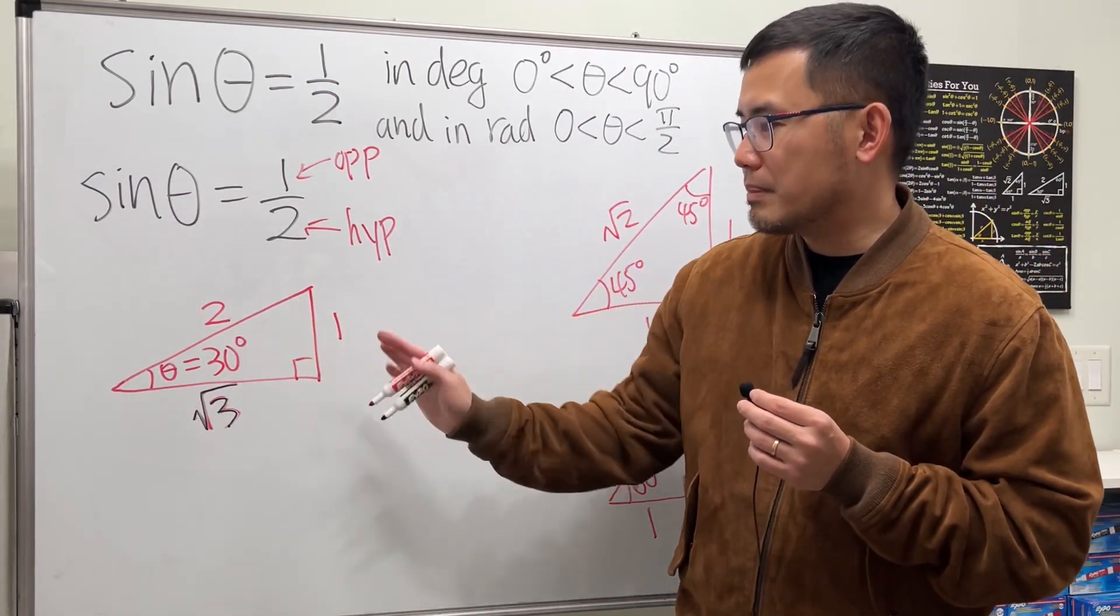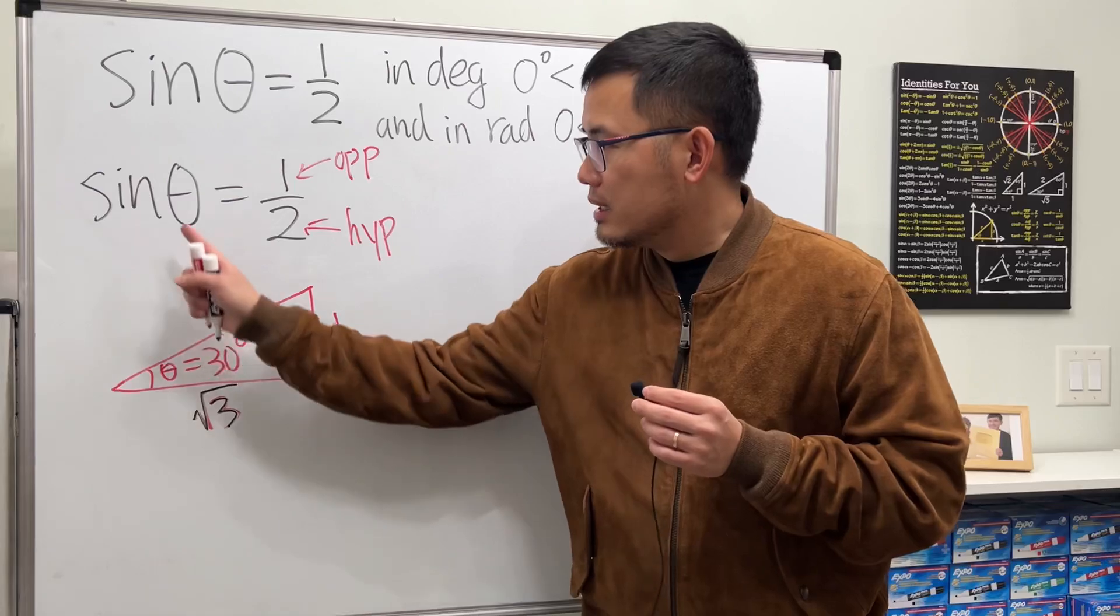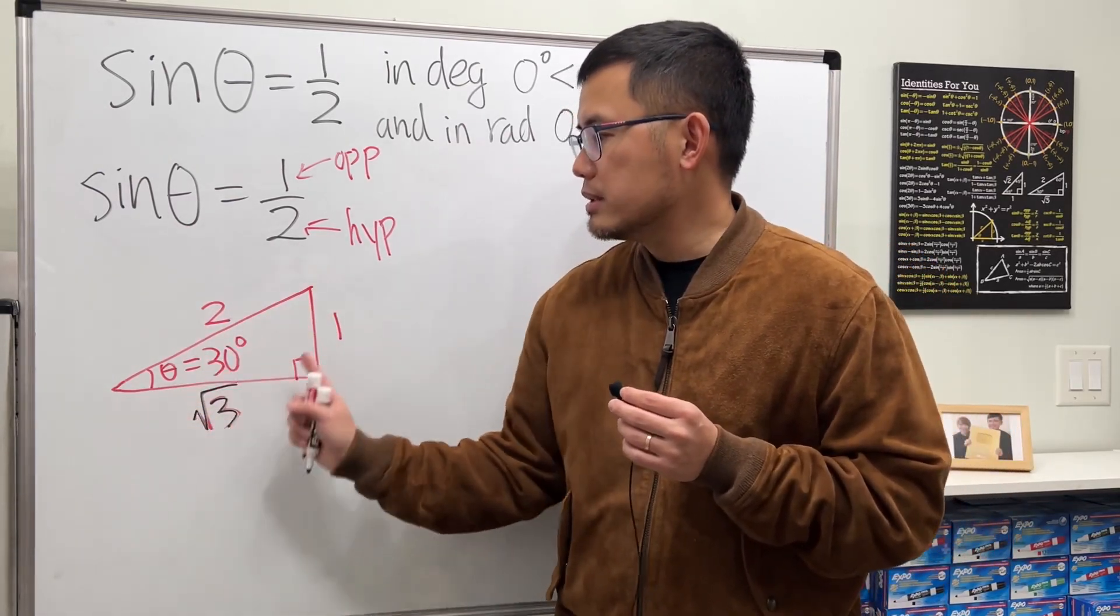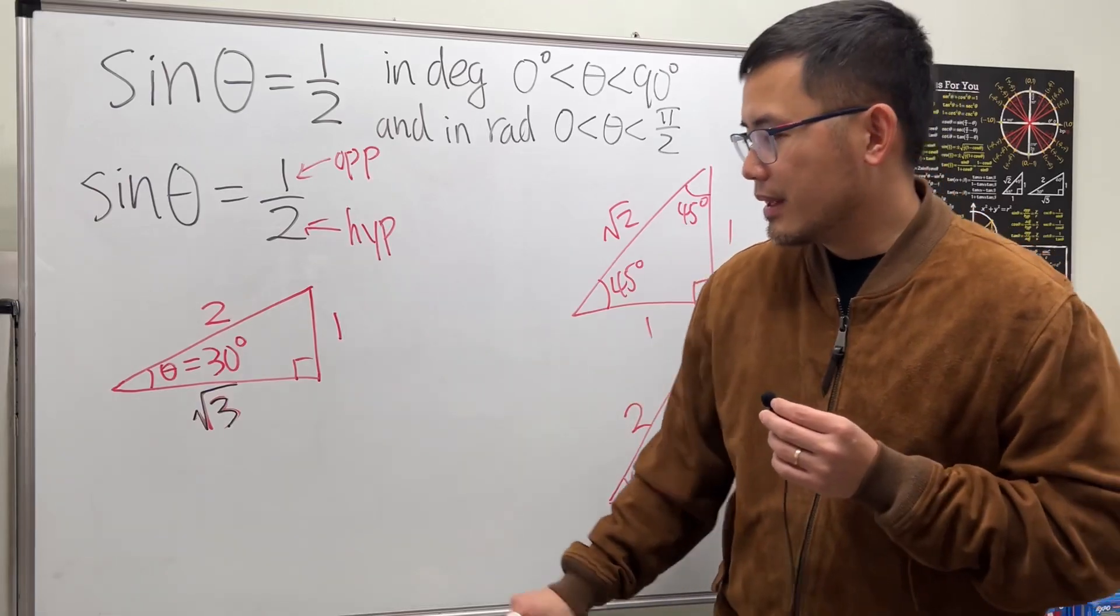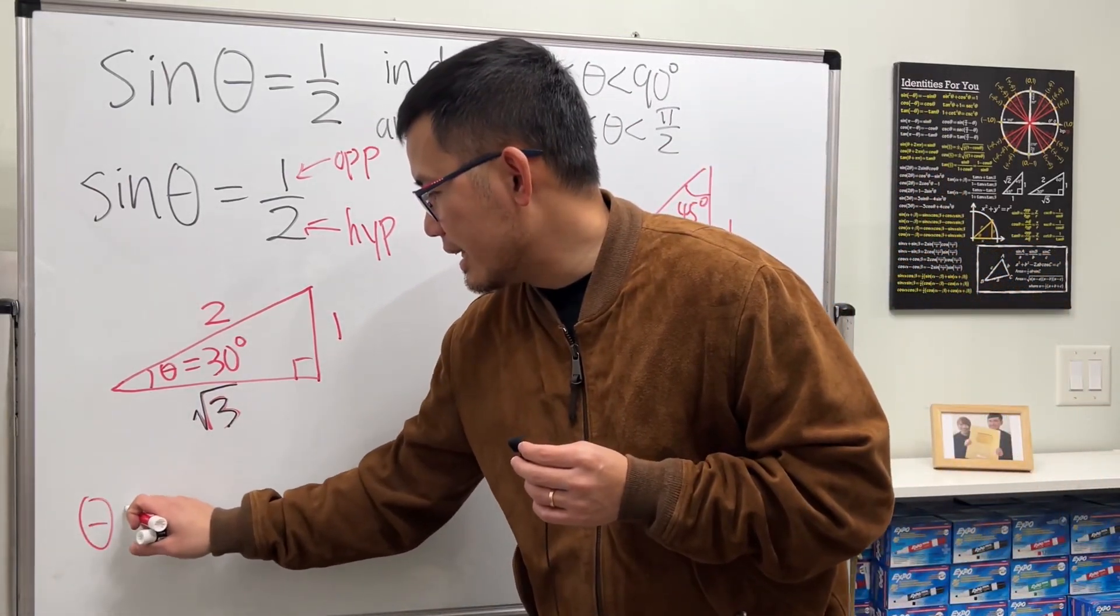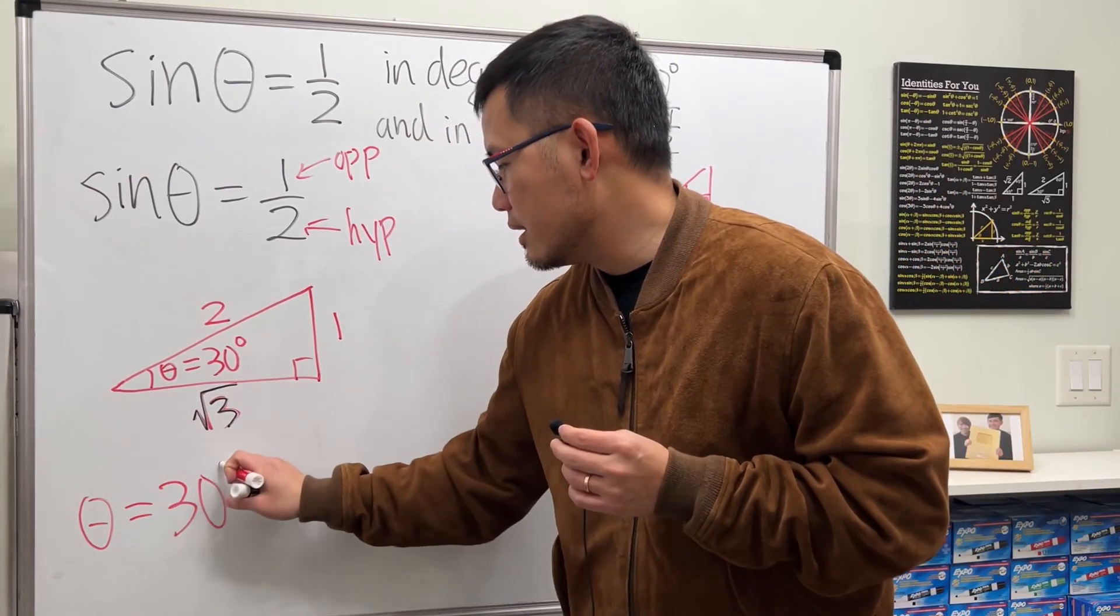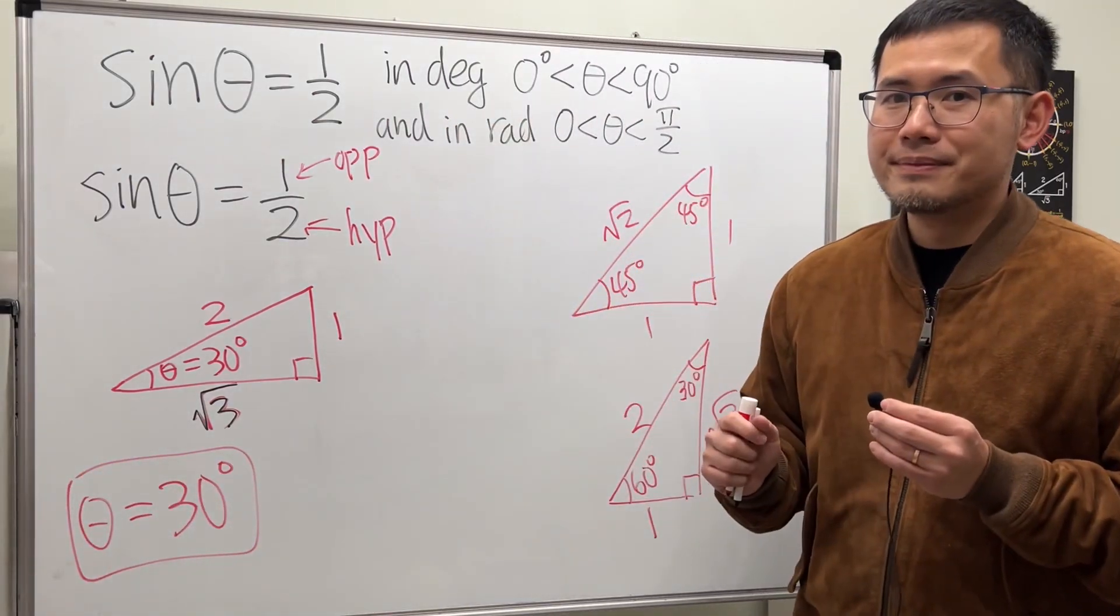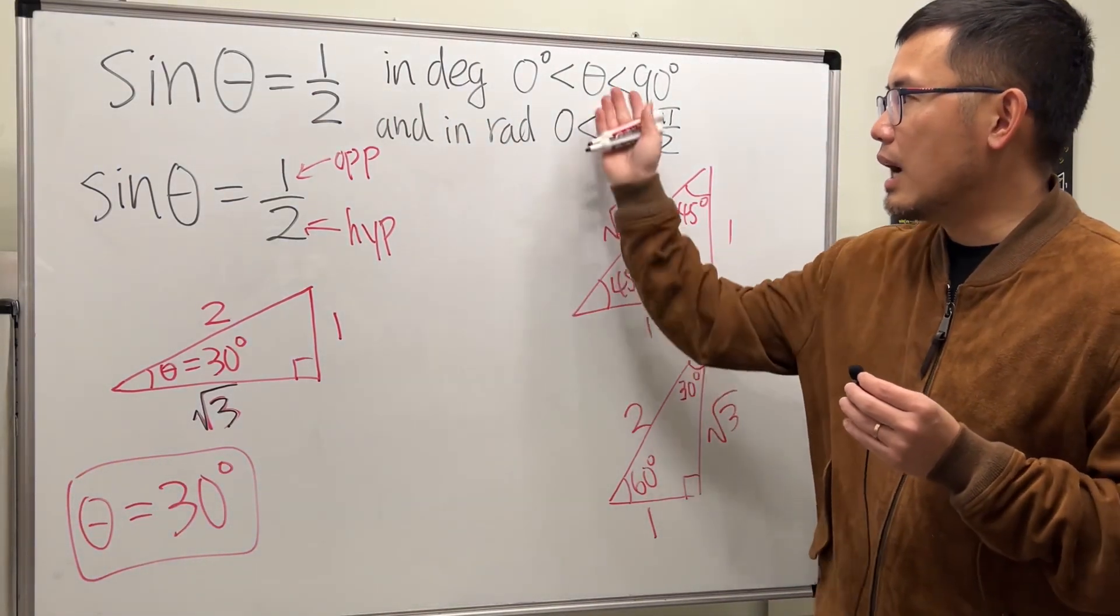That angle right there is 60, but we don't care. Sine of 30 degrees is opposite over hypotenuse, so 1 over 2. So as we can see, theta equals 30 degrees. So that's the first part, and in fact that's the only answer on this interval.